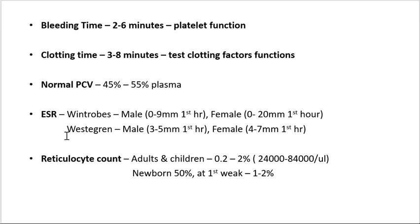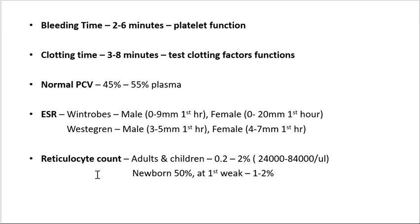Normal erythrocyte sedimentation rate (ESR) is done by two methods — Wintrobe and Westergren. As per Wintrobe method: male 0 to 9 mm in the first hour, female 0 to 20 mm in the first hour. According to Westergren method: male 3 to 5 mm in the first hour, female 4 to 7 mm in the first hour.